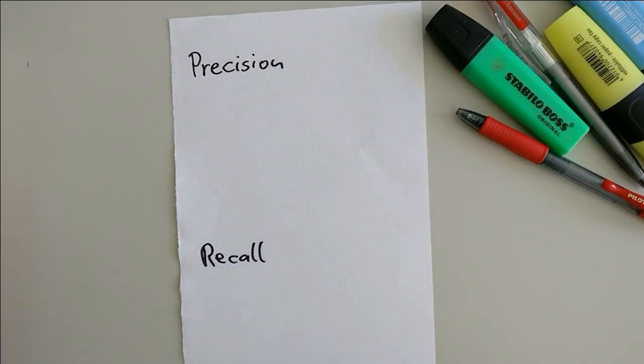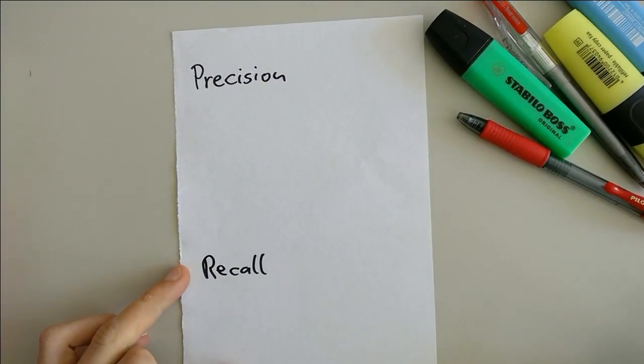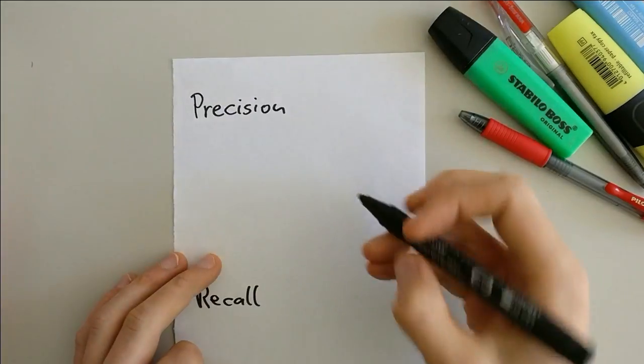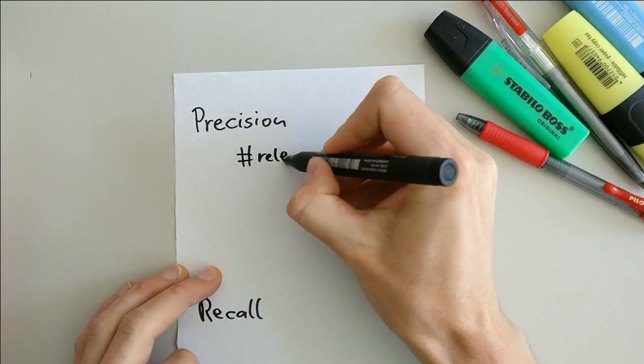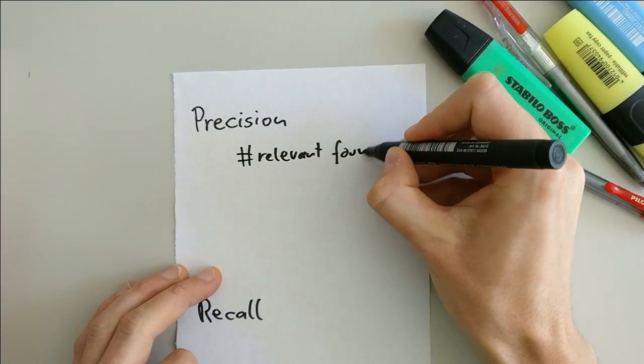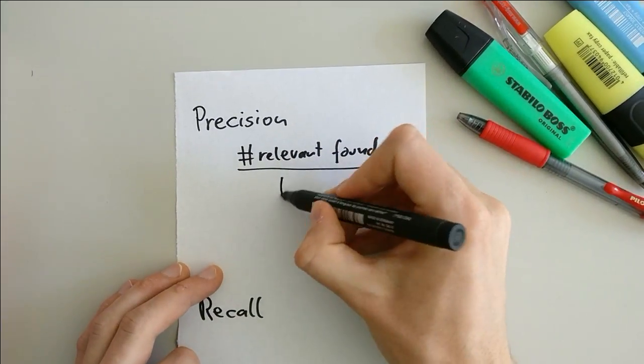Precision and recall are two measures to say something about a search engine's quality. The precision is the number of relevant items a search engine finds divided by all the found items.